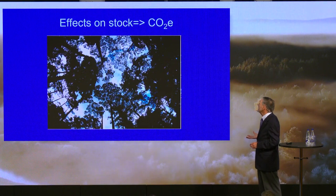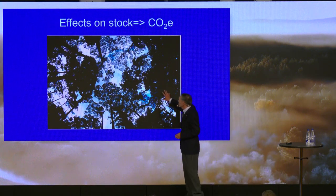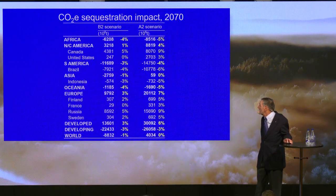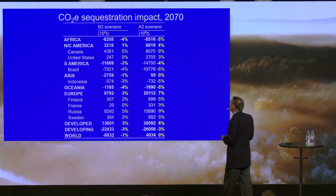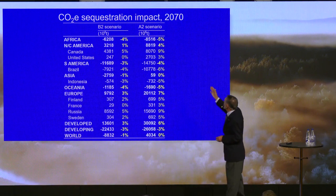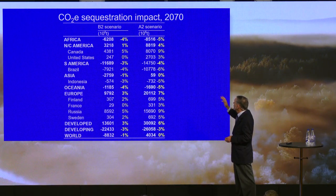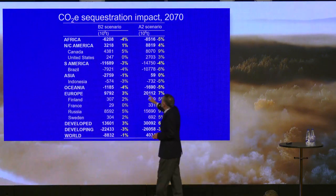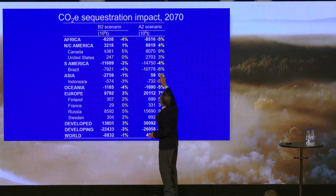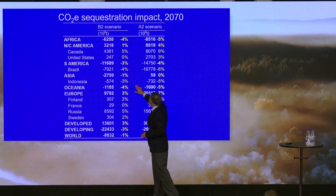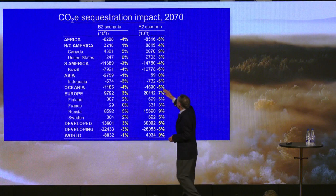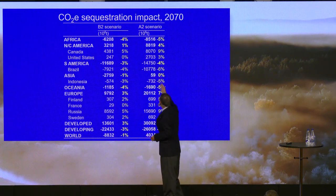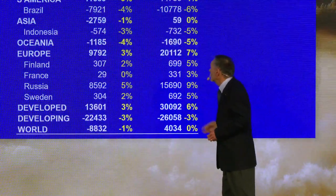Another thing we can look at is the amount of carbon stored in the forest. The data are in million tons of CO2 equivalent, showing the impact in the year 2070 of the change in temperature. We see the negative effect in Brazil — 4% to 6% — and in Indonesia — 3% to 5%. On the other hand, positive effects: in Canada an increase of 5% to 9%, and in Sweden 2% to 5%.